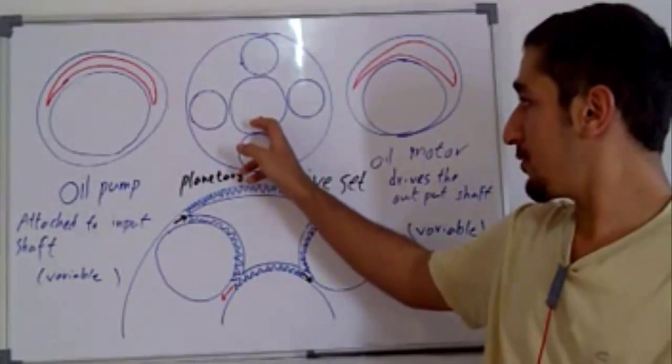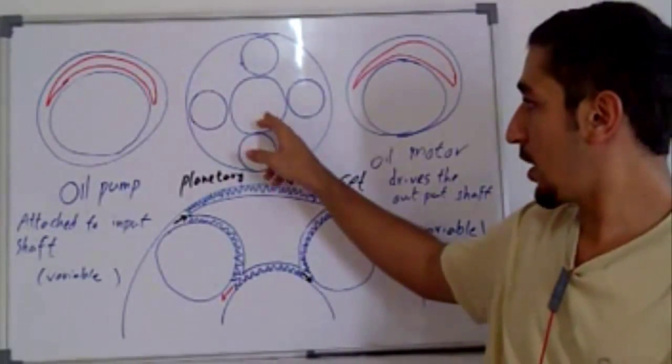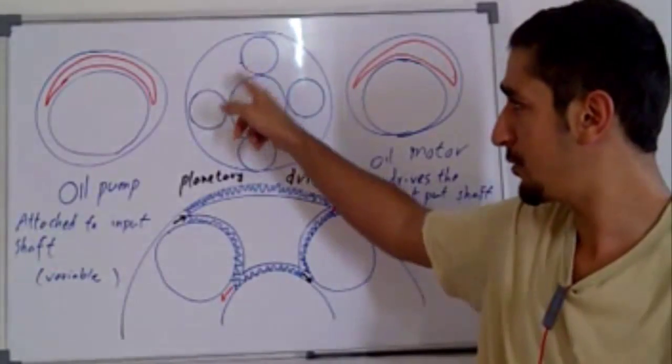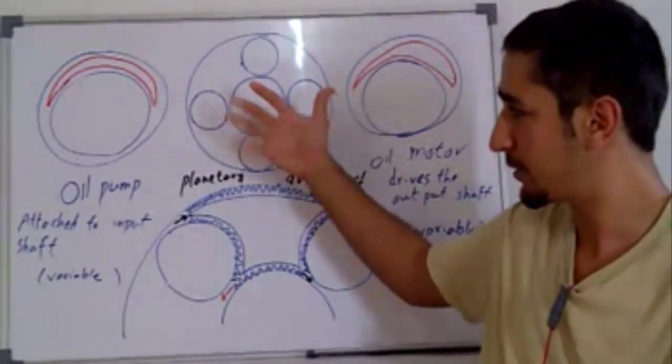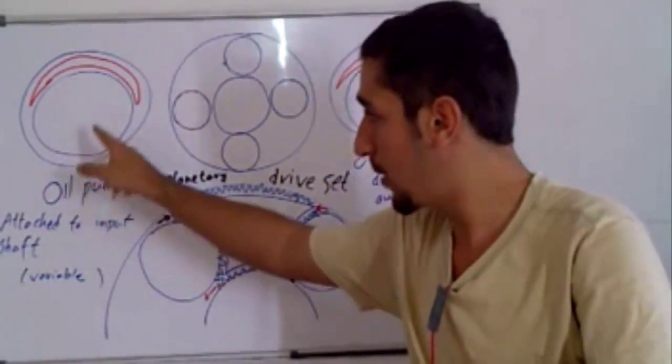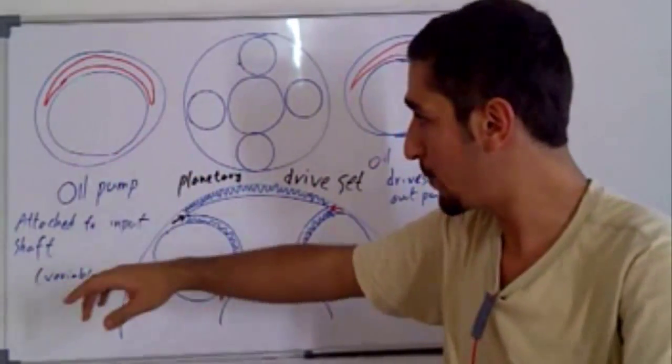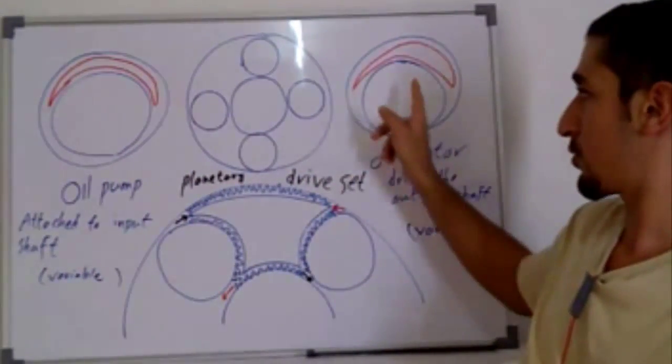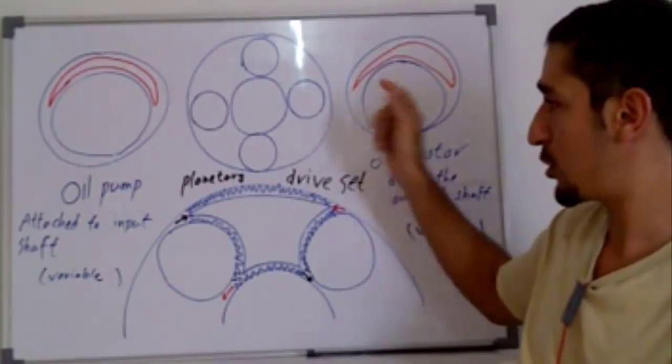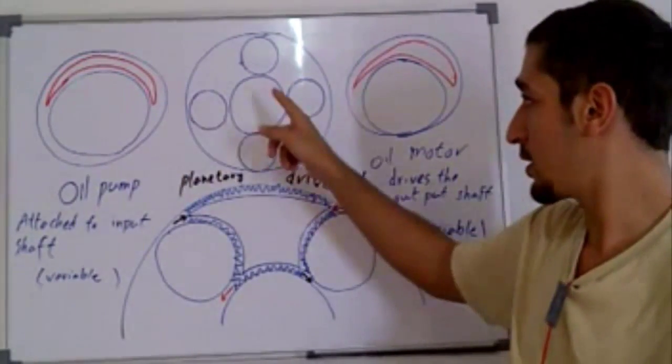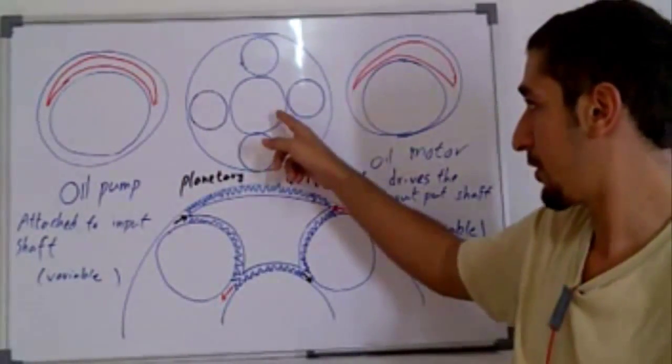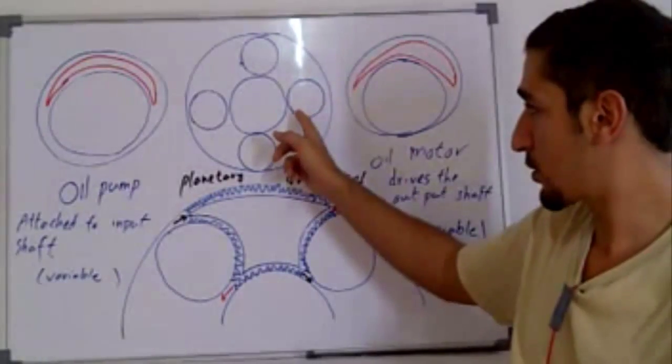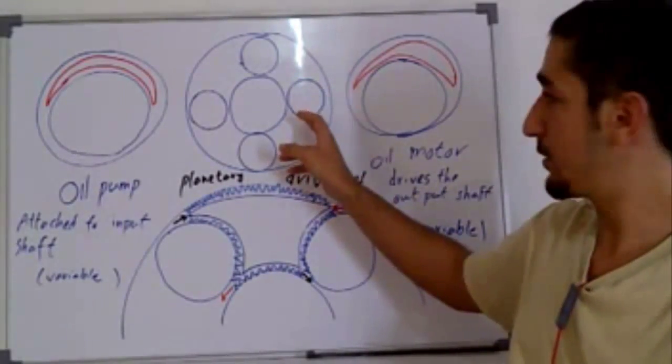A planetary gear contains a sun gear, planetary gears, and a ring gear. Planetary gears are connected to the planet carrier. The oil pump is going to be driven by the input shaft and the oil motor is going to be connected to the output shaft. The input shaft is connected to the sun gear and the output shaft is connected to the planetary gear.